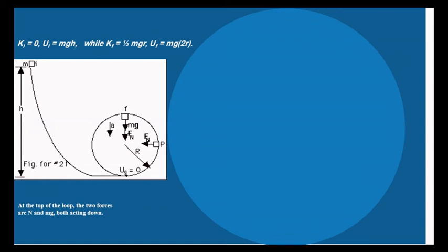Initial potential energy equals mgH. While final kinetic energy equals half mvR squared. And final potential energy equals mg2R. Then initial mechanical energy equals final mechanical energy. And mgH equals half mvR squared plus mg2R. And h equals 1 over 2g v squared plus 2R.